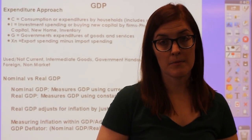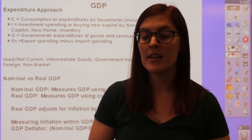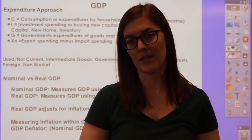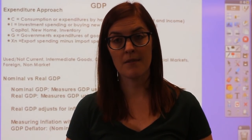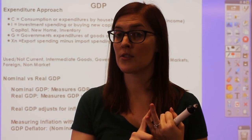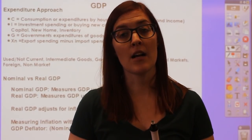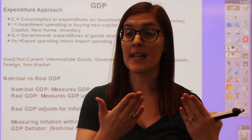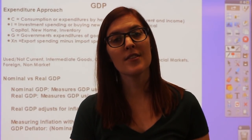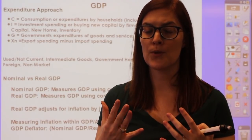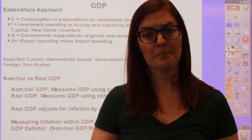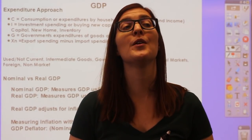I is investment, or gross private investment. This is the component people mix up by trying to include financial transactions—but remember, it has to be something produced. Only three things count as investment in GDP: capital (machinery and new factories), inventory (items made but not sold—for example, if Old Navy produces 1,000 pairs of jeans in 2018 that don't sell until 2019, they count in 2018 GDP as inventory), and a new home purchased or produced.